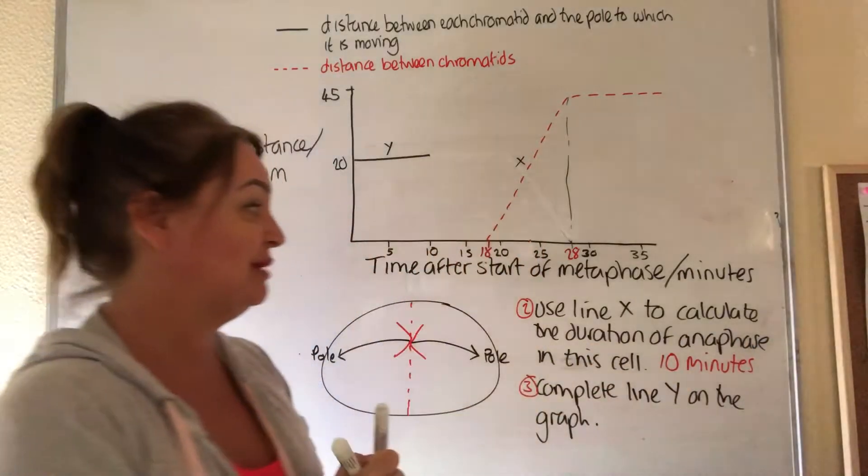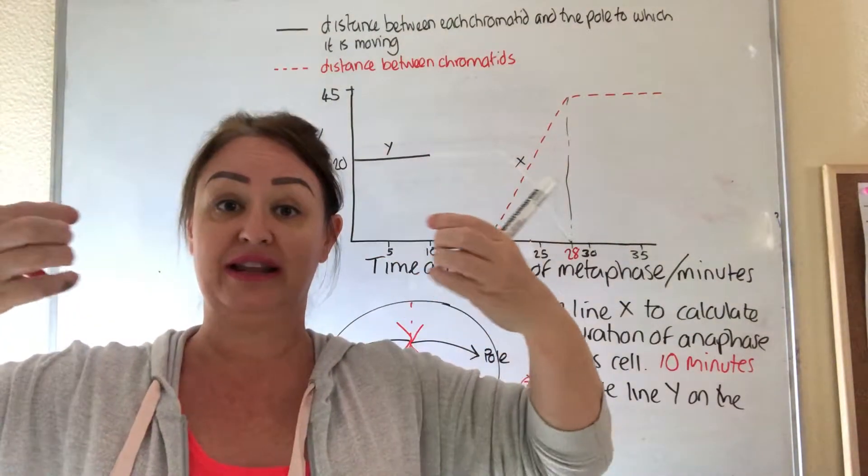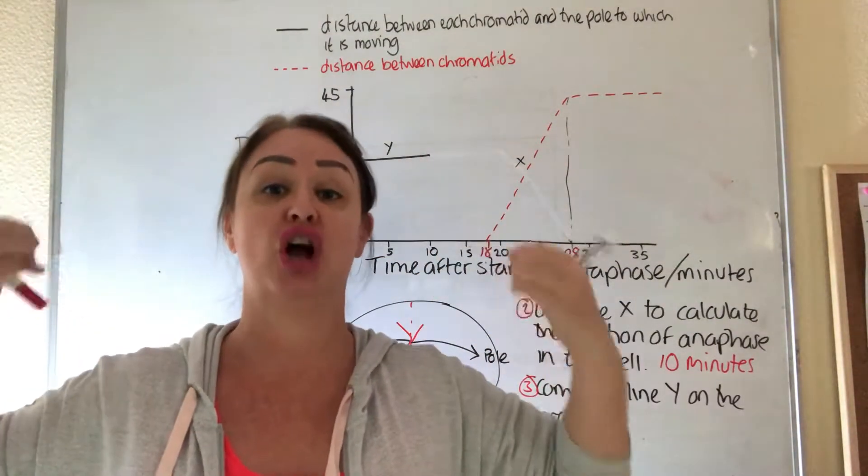Anaphase is 10 minutes because anaphase is when it starts moving apart, the chromatids, to when they reach their destination at the opposite poles.